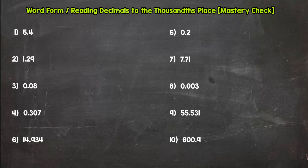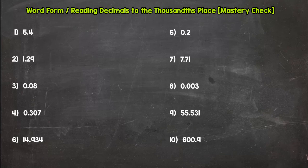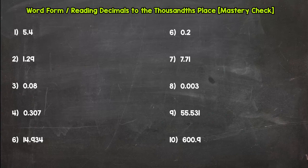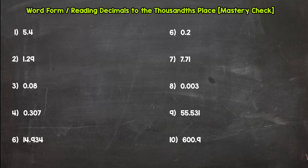You should have a pencil and paper or a mini whiteboard and a marker, something to write these down with. When I say pause here in a few seconds, you're going to pause the video and put all 10 of these decimals in word form. Then when you're ready, press play and you will check your answers with mine. So again, goal is 7 or up. Go ahead and press pause.